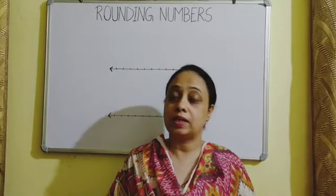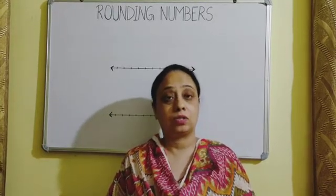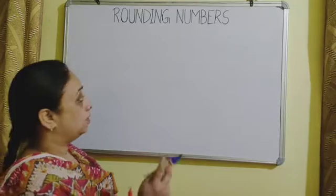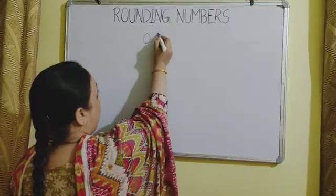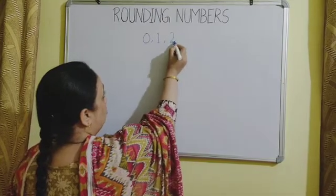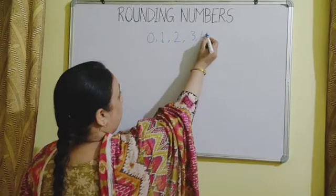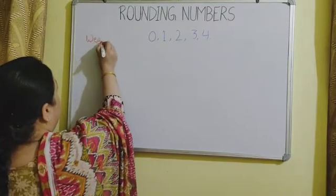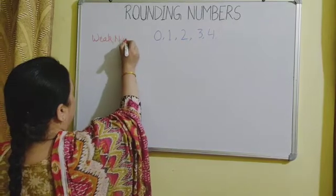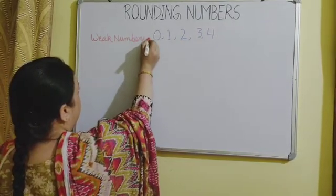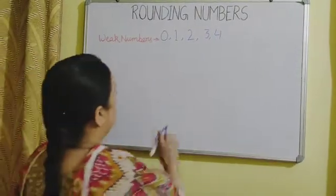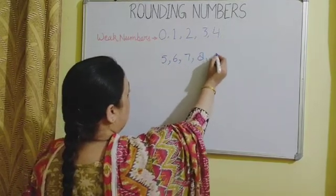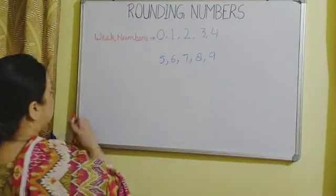We round numbers when we don't need the exact value of anything. On rounding off, the number either increases or decreases. Numbers 0, 1, 2, 3, and 4 are weak numbers, whereas numbers 5, 6, 7, 8, and 9 are strong numbers.